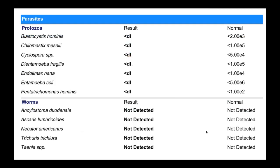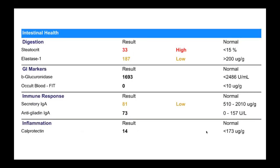No parasites were detected in this case. Under the intestinal health section, both steatocrit — a measure of fat malabsorption — and elastase are significantly elevated and reduced respectively, confirming dysfunction related to digestion involving at least the pancreas. The presence of H. pylori also suggests hypochlorhydria is likely part of the overall picture. Secretory IgA is very low — often a consequence of reduced beneficial bacteria, especially butyrate-producing bacteria — and Faecalibacterium, one of the more important butyrate producers, was below detection limit in the normal bacterial flora section.